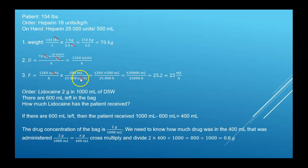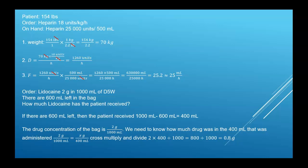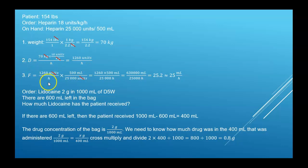For a 154-pound patient ordered heparin at 18 units per kilogram per hour: first convert weight to kilograms, then multiply by 18 to find the D rate in units per hour. To find the flow rate, take the D rate and multiply by the on hand inverted. So 1,260 units per hour times 500 milliliters over 25,000 units — cancel the units, multiply across, divide — gives the flow rate in milliliters per hour.